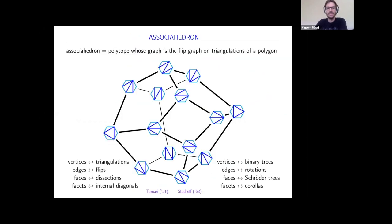First I should start with an associahedron. An associahedron is a polytope whose graph is a flip graph on triangulations of the polygon. You can think of it with any Catalan family you like. Here we use for vertices: triangulations or binary trees; for edges: flips between triangulations or rotations among binary trees; for faces: dissections or shorter trees; and for facets: internal diagonals of the polygon or corners.